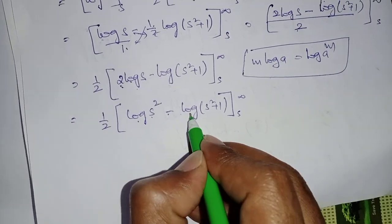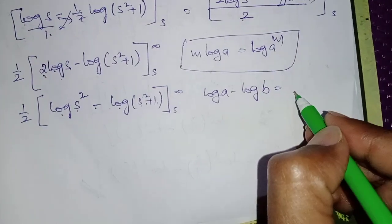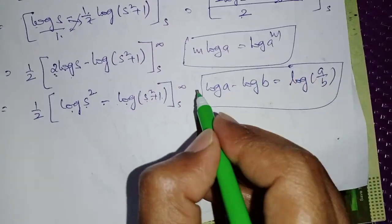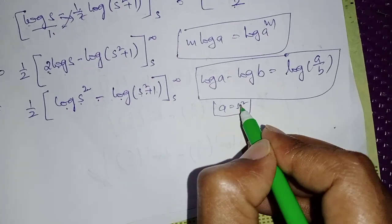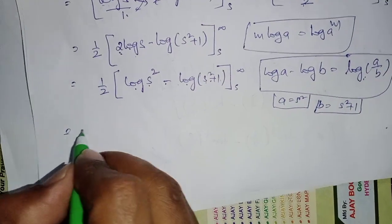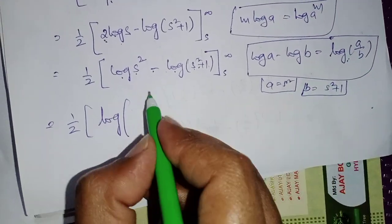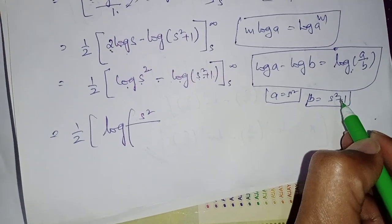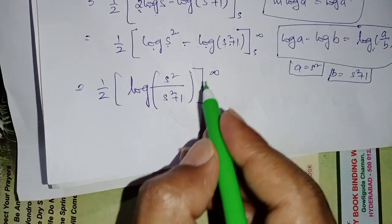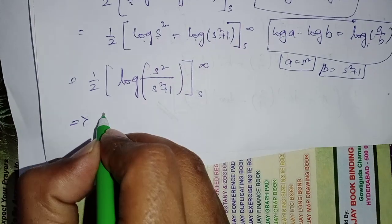Observe that log(s²) - log(s² + 1) uses the rule log a - log b = log(a/b), where a = s² and b = s² + 1. So the expression becomes (1/2) log[s²/(s² + 1)] with limits s to infinity. Now substitute the upper and lower limits.